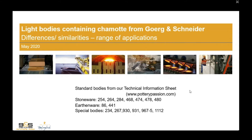We have standard bodies with technical information sheets which you can find on the page www.potterypassion.com. We have three different groups: stoneware, earthenware, and special bodies. Earthenware is the group with only two different kinds of qualities. The word 'bodies' means blended clays with or without additives — raw materials like dolomite or feldspar. Chamotte is another word we use quite often; this is burnt clay milled to special grain sizes, also called grog.